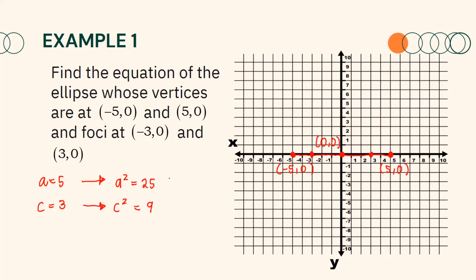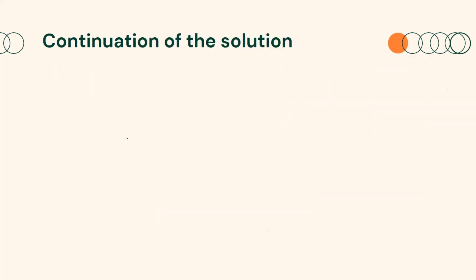We can use the values of a² and c² to find the value of b². From the previous solution, we have known that our ellipse is horizontally oriented with center at the origin. Therefore, we will use the standard form of the equation x² over a² plus y² over b² equals 1.